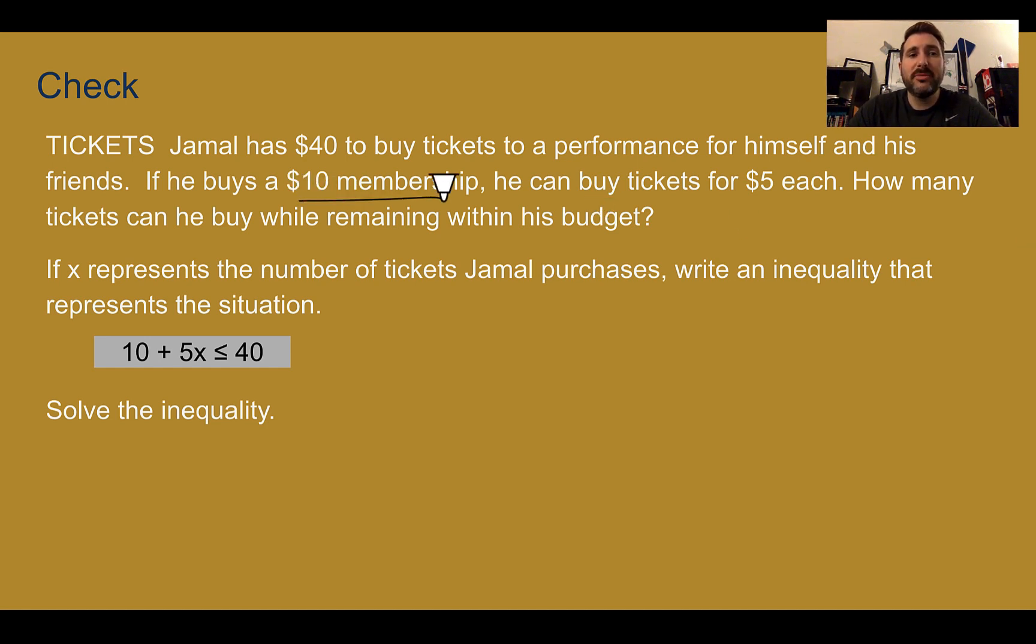So it's a $10 membership that you buy once. He can buy tickets for $5 each. That's where your x is. That word each or per usually helps you out. And he has a total of $40 that he can spend.